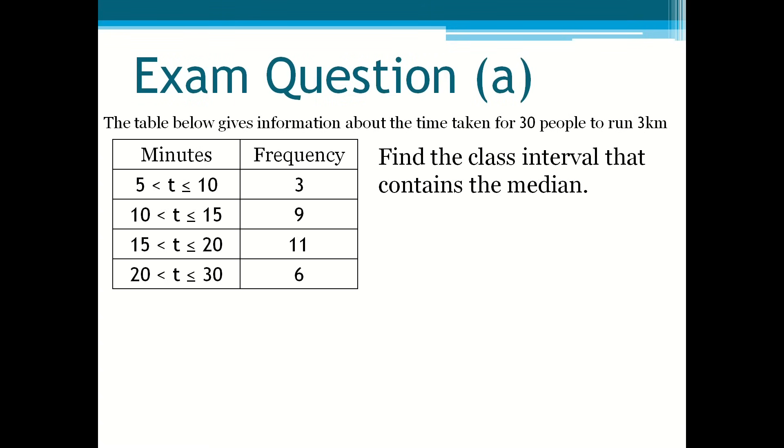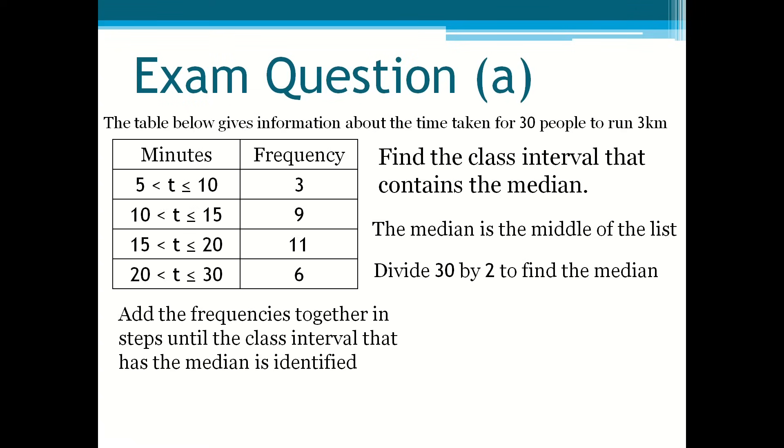So the median is the middle of the list. So you have to divide 30 by 2 to find the median. And then you add the frequencies together in steps until the class interval that has the median is identified. So 30 divided by 2 is 15. Then you have to do 3 plus 9 is 12.